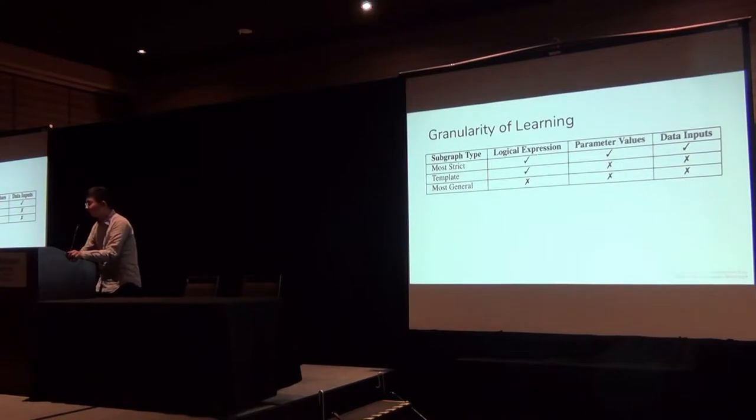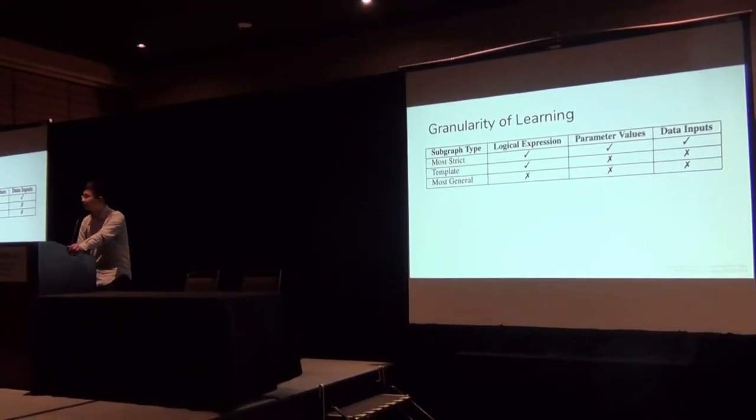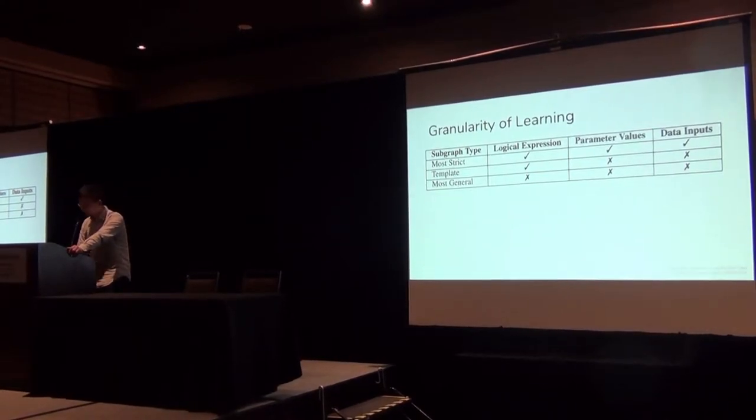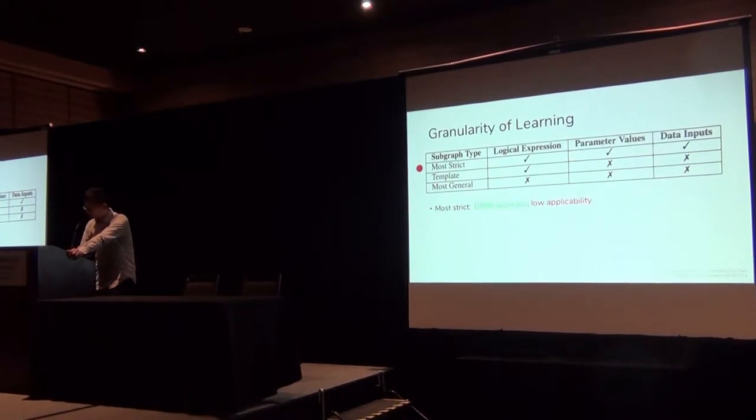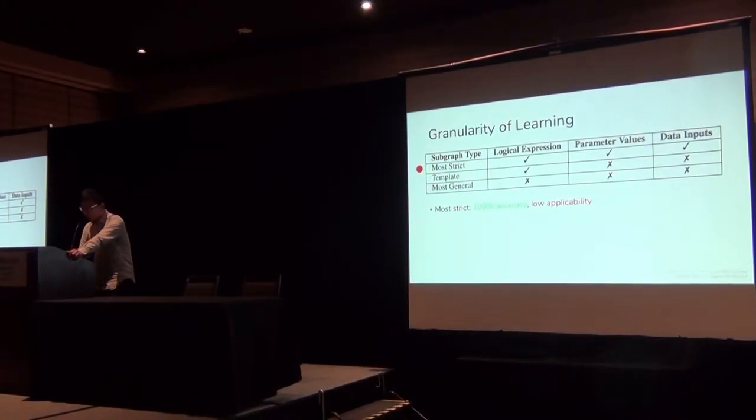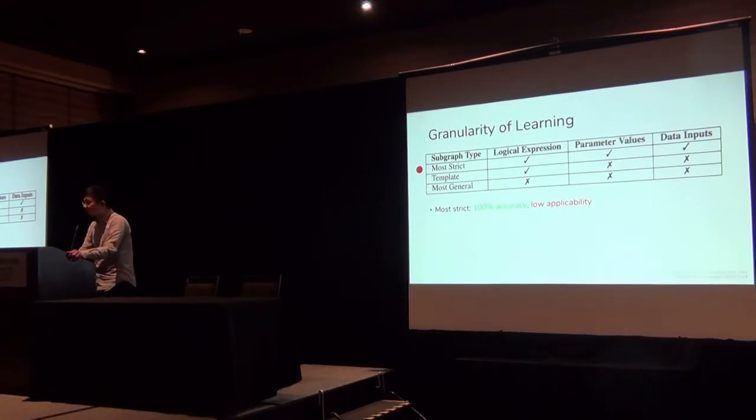By granularity of learning, I mean which part of the query subgraph is considered fixed when we train a model. There are, in general, three pieces that form a subgraph. First, we have the logical expression of the query subgraph. Then we have these parameter values, like filtering and joining predicate values. And lastly, we have the input data set. One extreme is we can fix everything. That basically means memorization. We will cache the output cardinality of all subgraphs executed so far. If for future subgraphs it matches exactly as one of the existing ones, we'll use the cache cardinality. The advantage is that it has 100% accuracy because there is just memorization, no learning going on. But it has low applicability because we simply can't do anything for non-exact match subgraphs.